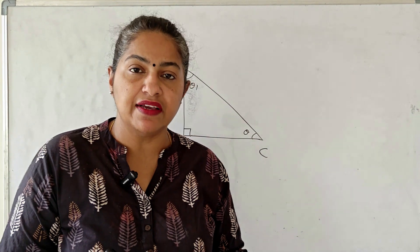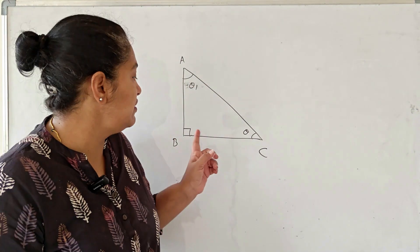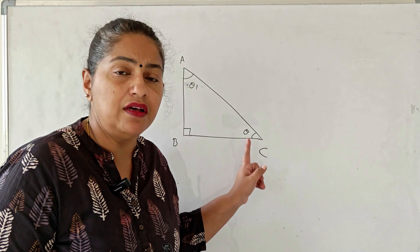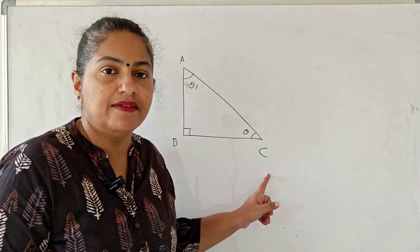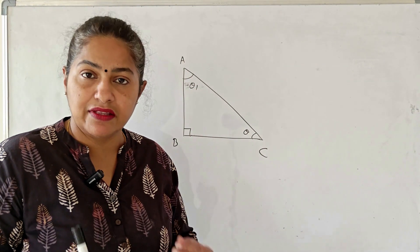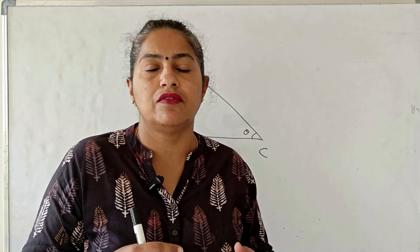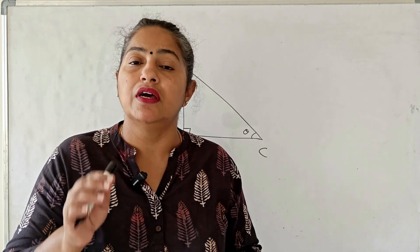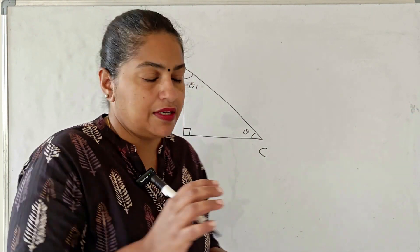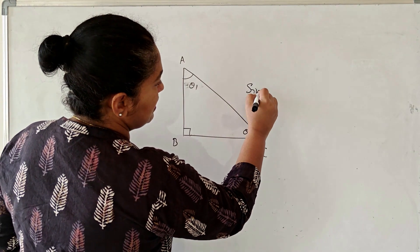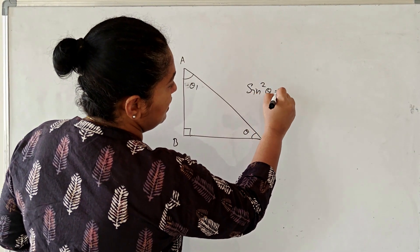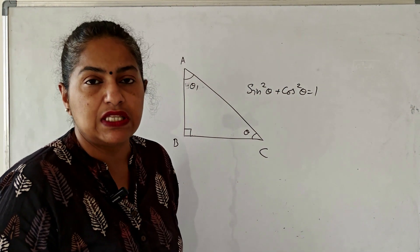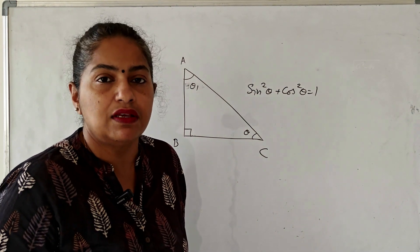Here you have a right angle triangle which is right-angled at B. I have named this angle as theta, which is angle C, and this particular angle as theta 1. Now let me write down the identities. The first one is the relation between sine and cosine, which is sin²θ + cos²θ = 1.